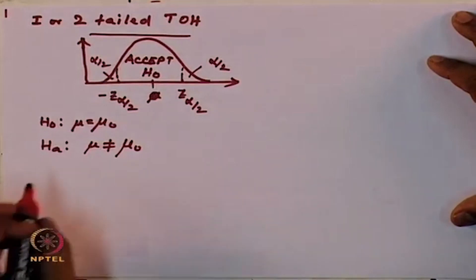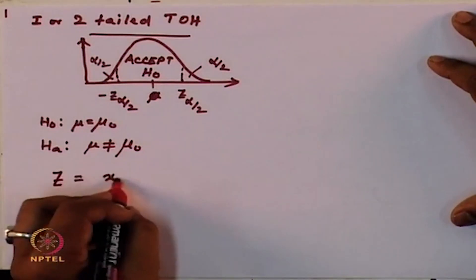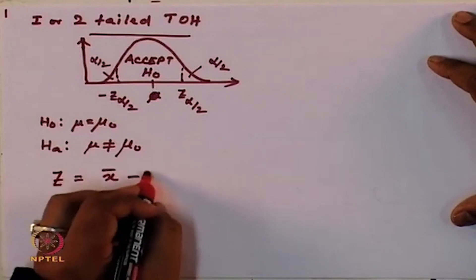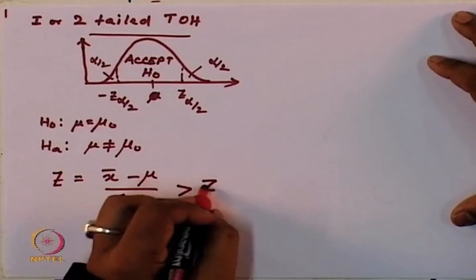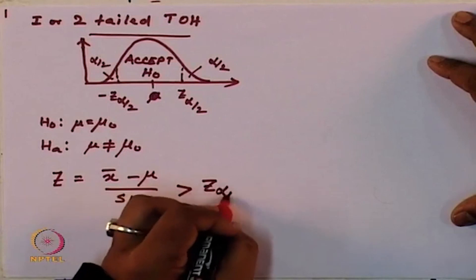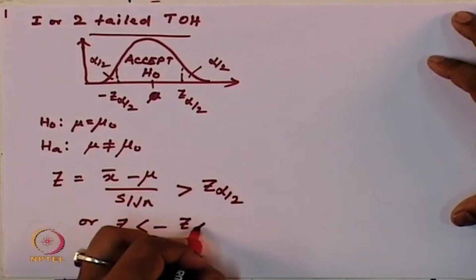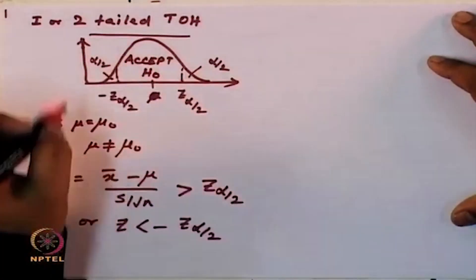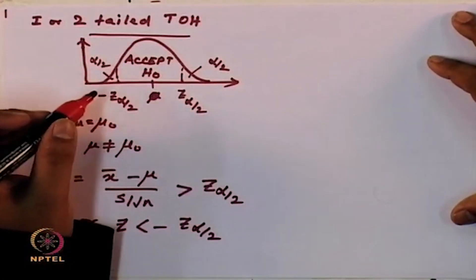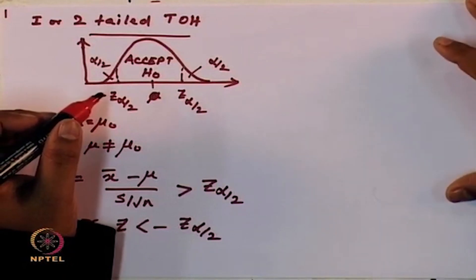That is why you consider both the left tail and the right tail, and that is why it is called a two tailed test of hypothesis. If your z value for your test statistic, x bar minus mu by S by root n, is greater than z of alpha by 2, or z is less than minus z alpha by 2, then your H0 can be rejected; otherwise you cannot reject H0.